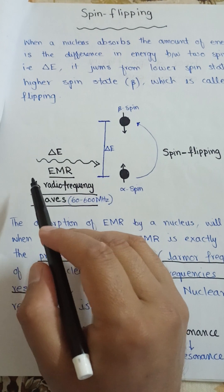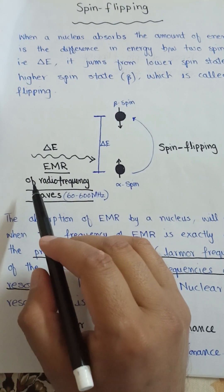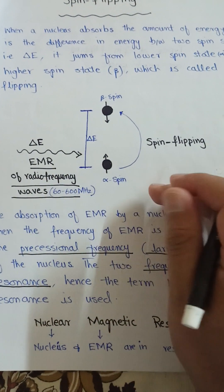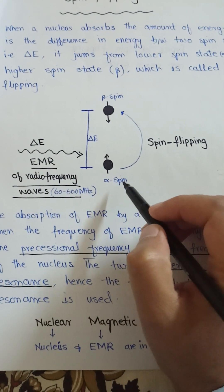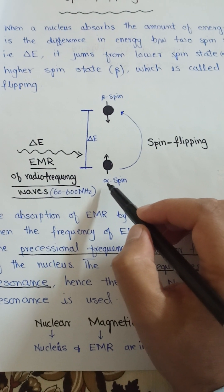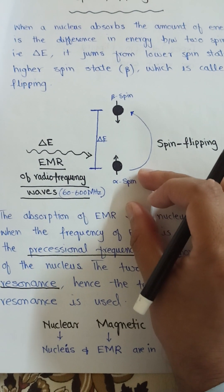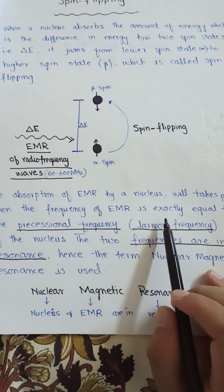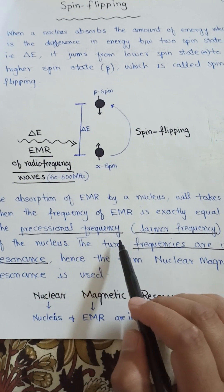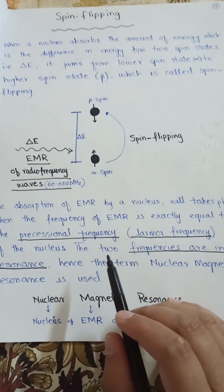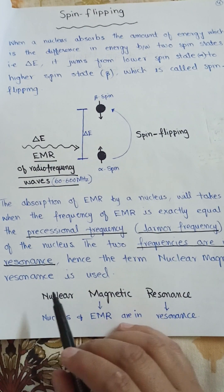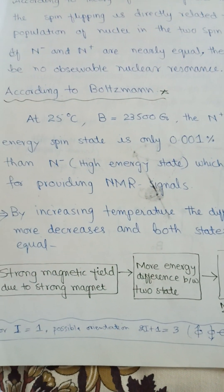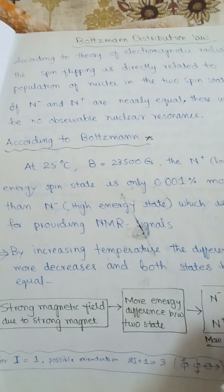As shown in the diagram, when electromagnetic radiation with a frequency between 60 to 600 megahertz — which is the radio frequency wave range — matches the spin states, the nuclei undergo spin flipping and jump from alpha spin state to beta spin state, or from lower energy to higher energy spin state. This absorption takes place when the frequency of electromagnetic radiation is exactly equal to the precessional frequency or Larmor frequency of the nucleus, and the two frequencies are in resonance — hence the term nuclear magnetic resonance. Nuclear refers to the nucleus and magnetic refers to the electromagnetic radiation, both in resonance with each other.